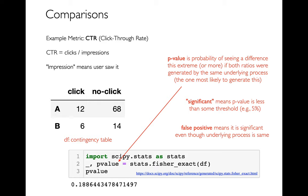In statistics we set a threshold — like 5% — and if the p-value is below that, we call it a significant result. At 19%, this result would not be significant, even though the click-through rate roughly doubled. I just don't have enough evidence because my samples were too small. To get a smaller, stronger p-value I could have this same kind of breakdown but with more data, or the data could be more extreme.